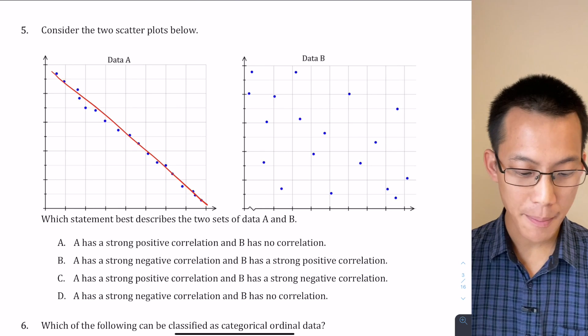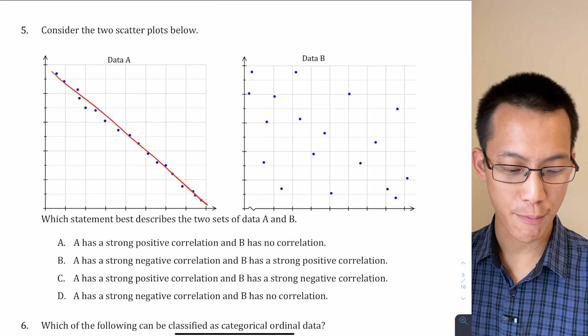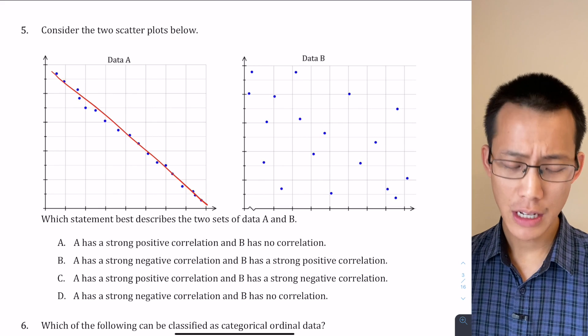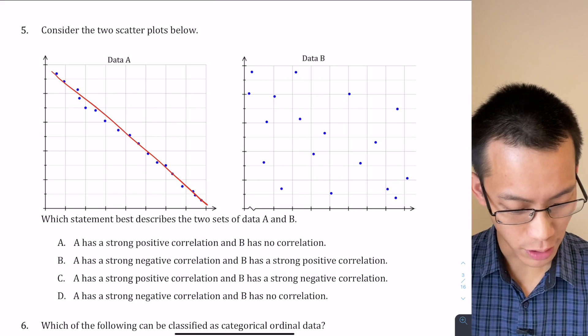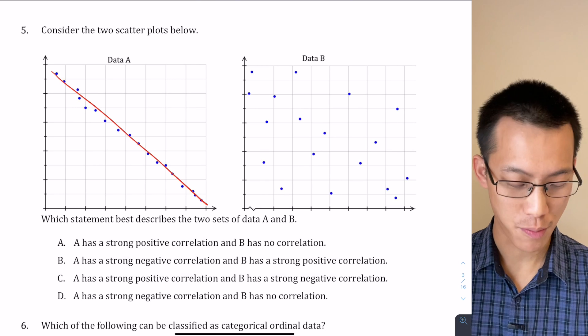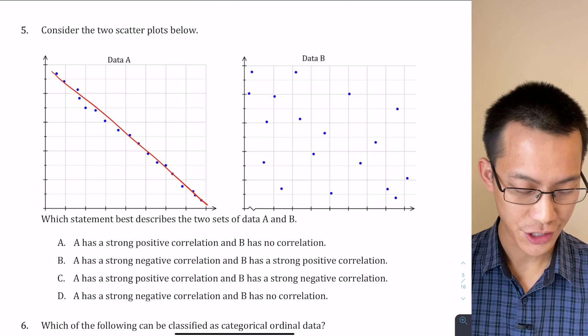So what that tells us is, number one, because they all stick close to the line of best fit, there's a strong correlation there. And if you have a look at all of the different answers, that's no surprise—they all say strong correlation.